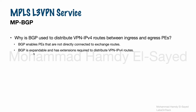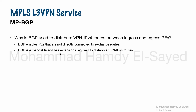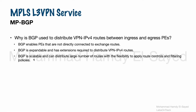BGP is expandable and has the extensions required to distribute VPN IPv4 routes. BGP is used in scalable networks and can expand without scalability issues. BGP also defines extensions to distribute VPN IPv4 routes, such as RDs — route distinguishers. BGP is scalable and can distribute a large number of routes.